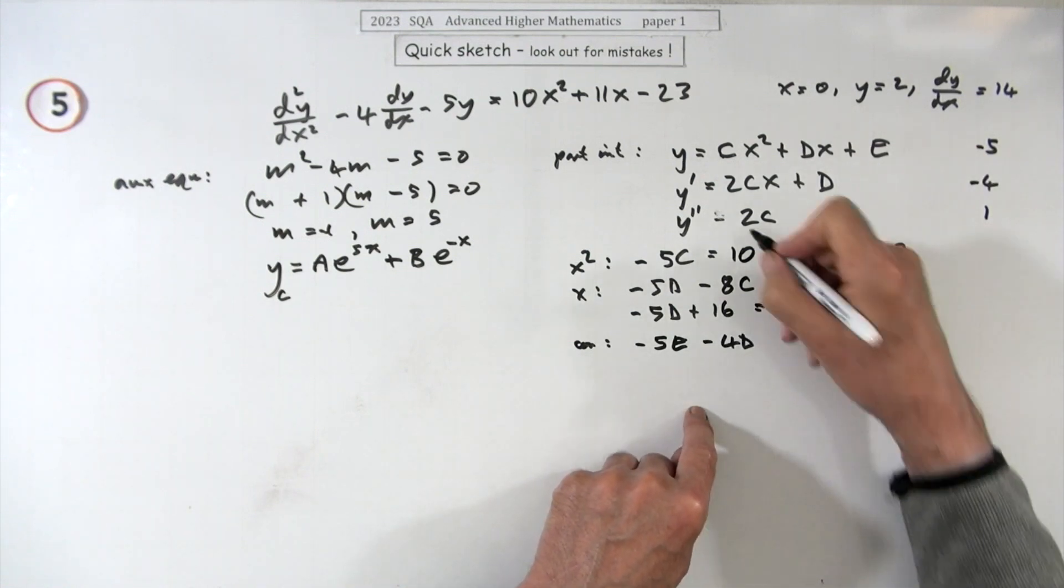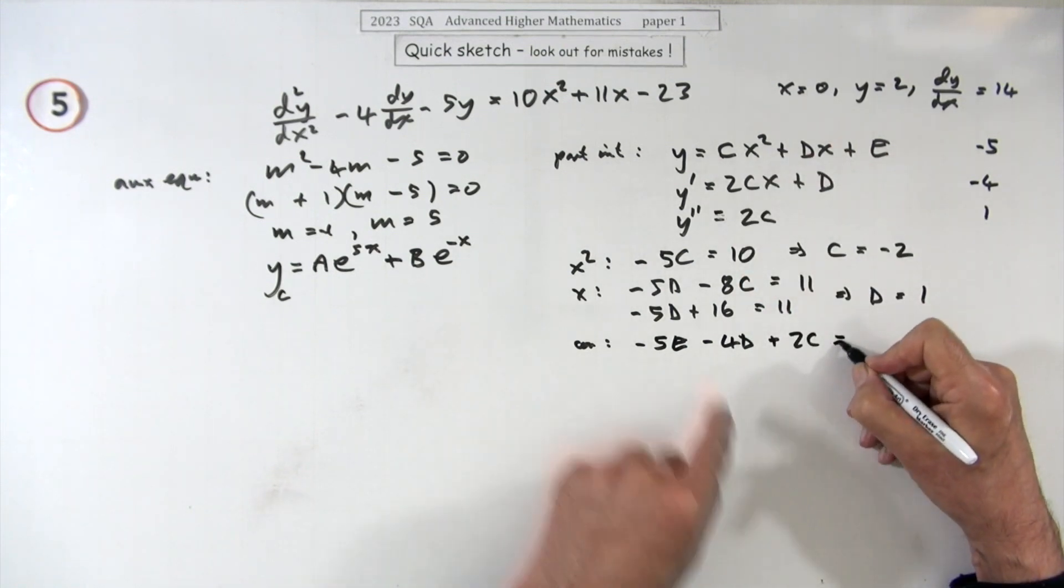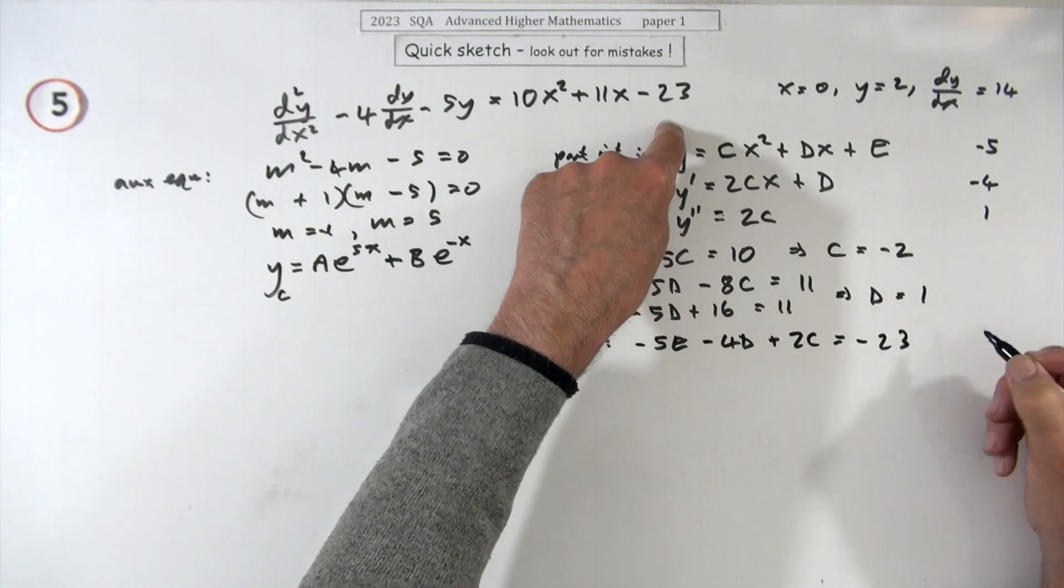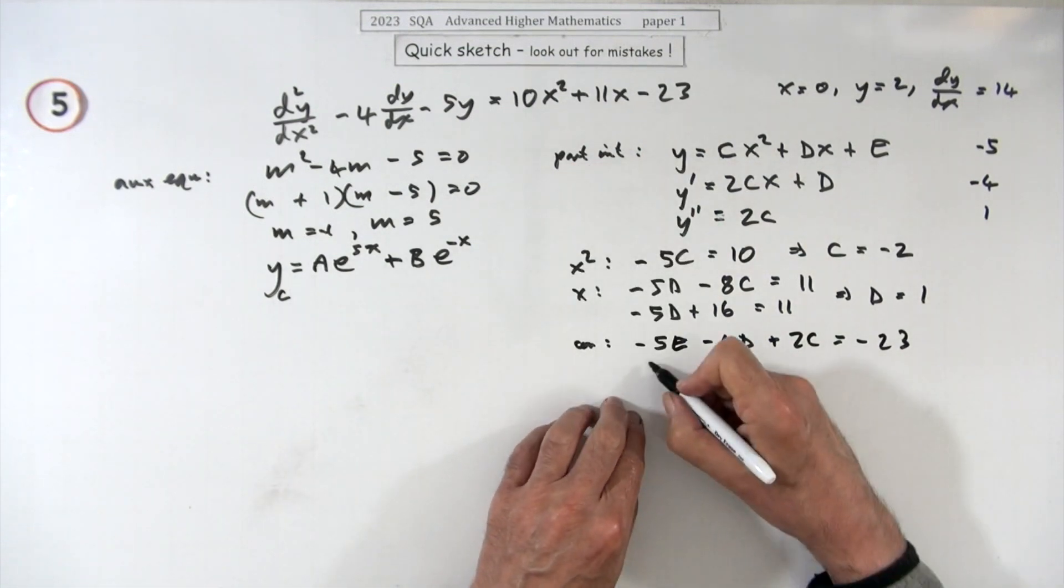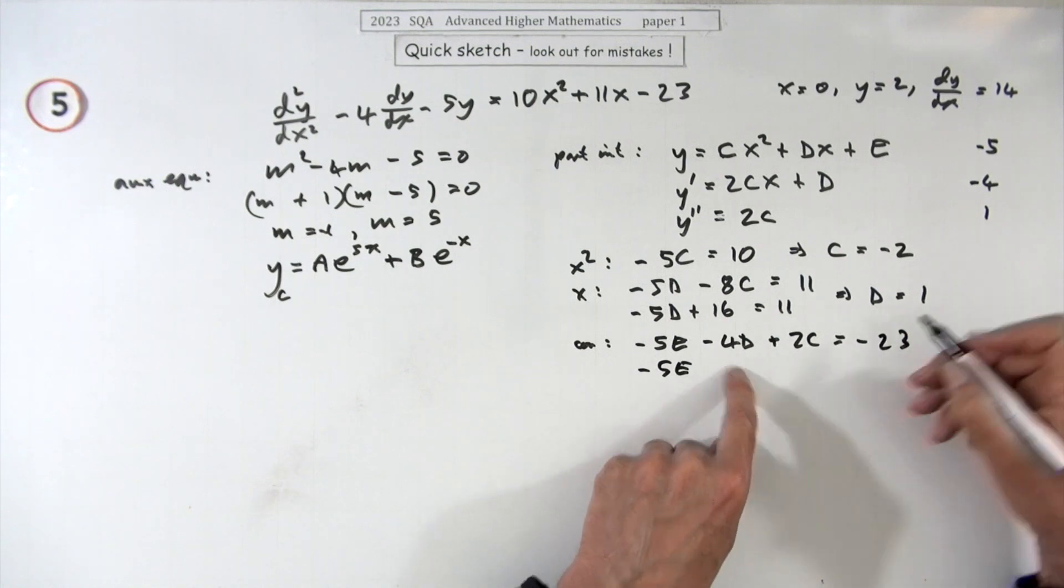And just one of them, that's a 2c, so it's plus a 2c to make that negative 23. I'll just have to put it down again, negative five of e, now I know them already, so that's minus four.